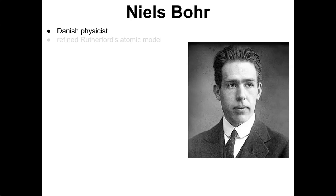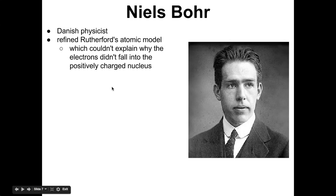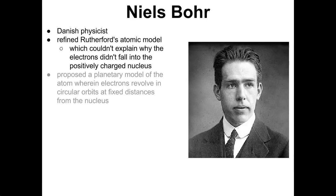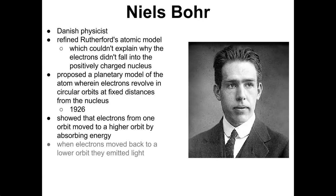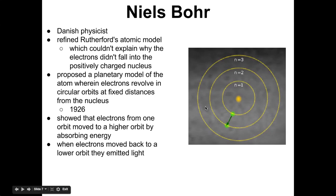Next came Niels Bohr, Danish physicist. He refined Rutherford's model, because Rutherford's model couldn't explain why the negative electrons weren't getting attracted to the positive nucleus. So he created this planetary model of the atom, where electrons revolve in circular orbits at fixed distances from the nucleus. And so basically it looks like, the model looks like this. And we're going to go over this more later in the class, that there's the nucleus at the center, and then the electrons are going around at different energy levels, as you can see here. So we'll talk more about that later.